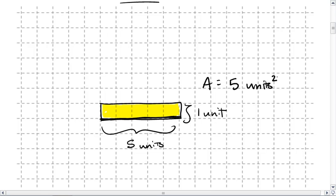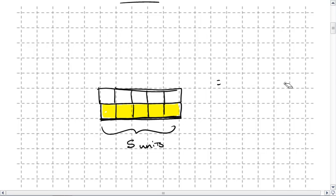If we stacked another row on top, we are now 2 units high and 5 units wide, which means we have 2 rows of 5 units, which gives us an area of 10 square units.